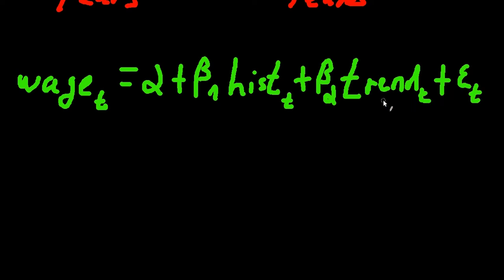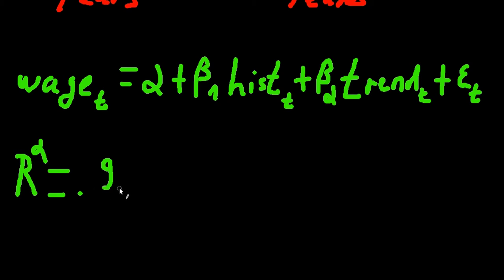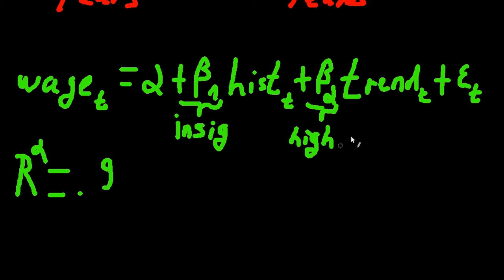We rerun the regression and the results are: R-squared is still pretty high, still 0.9, nothing has changed. But this time — and this is the very important part — beta_1 is actually insignificant, but beta_2 is highly significant. So you can see that it was only the common trend that explains the rise in wages in manufacturing, and not the number of economic historians.